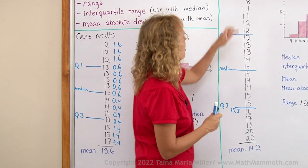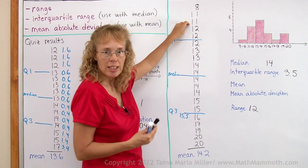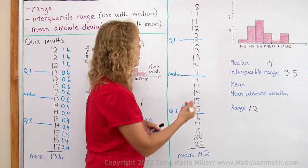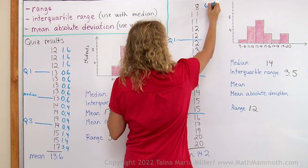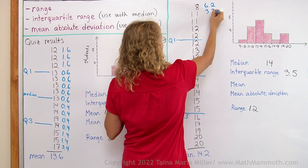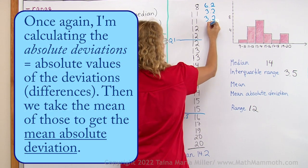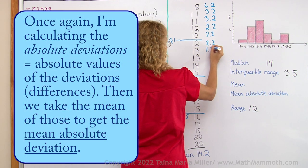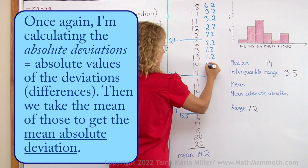Over here we do the same. Look at the difference between each data value and the mean. So here we get 6.2, 3.2, 2.2, then 1.2, here's 0.2.